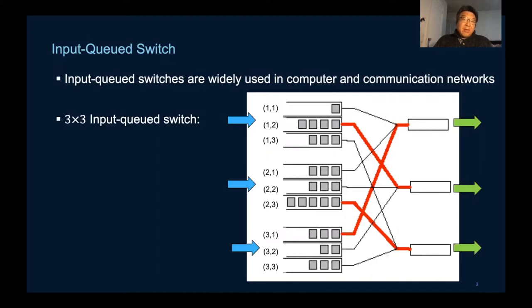Here we see a simple illustration of a three by three switch with three input ports and three output ports, totaling nine queues.